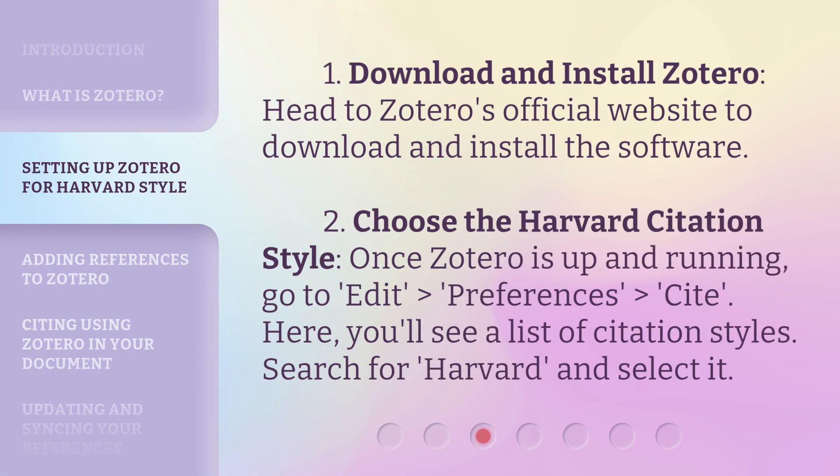Step 1: Download and install Zotero. Head to Zotero's official website to download and install the software. Step 2: Choose the Harvard citation style. Once Zotero is up and running, go to Edit > Preferences > Cite. Here, you'll see a list of citation styles. Search for Harvard and select it.